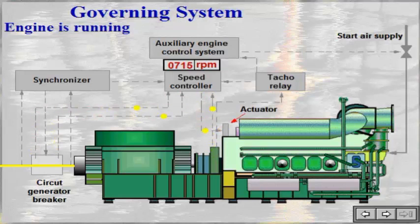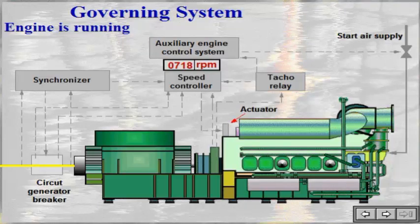When the circuit generator breaker is closed, the speed controller receives signals indicating the load of the engine from the sensors in the switchgear, and signals showing the load of the other auxiliary engines in the vessel. If the load of the engine diverges from the wanted load compared to the other engines, the speed controller changes the signal to the actuator to change the admission on the engine.